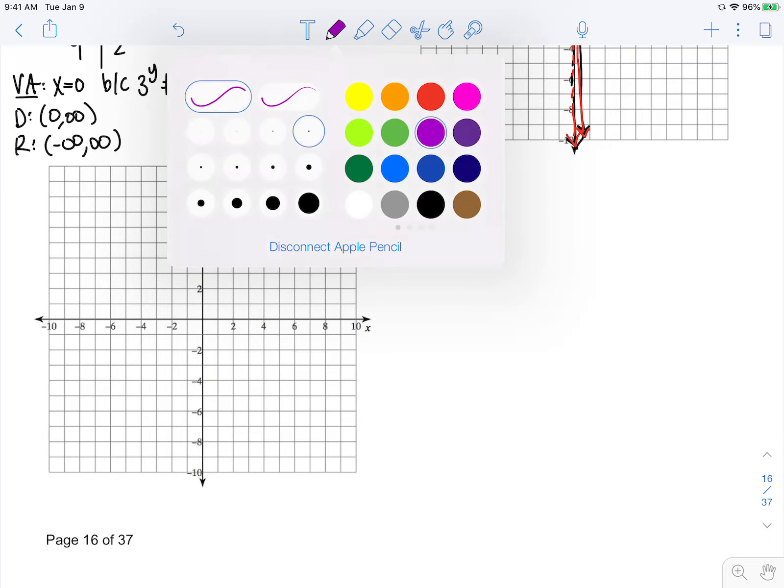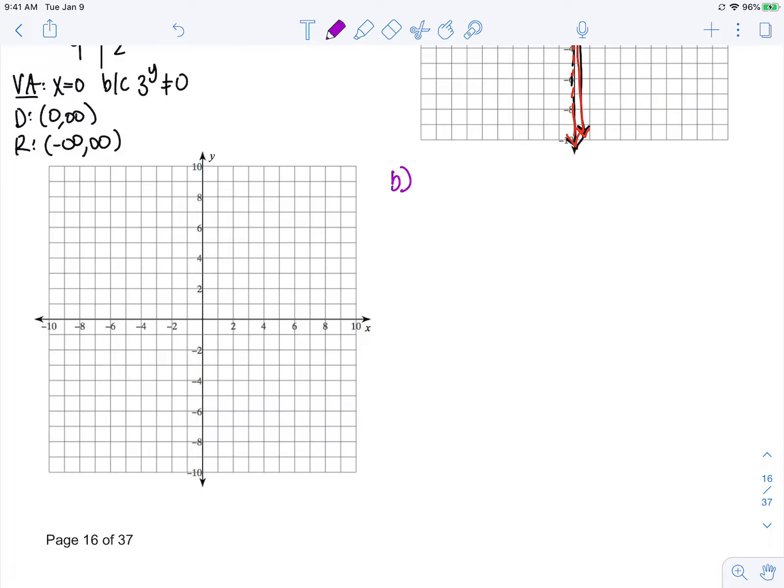Now in this video, I'm going to get into part B, which is h(x) = log base 3 of (x + 3). When I look at this equation, that plus 3 tells me we are going to shift log base 3 of x to the left 3 units.